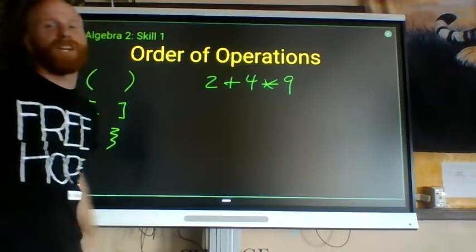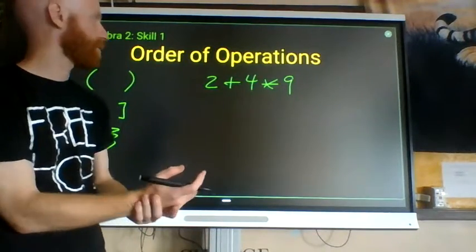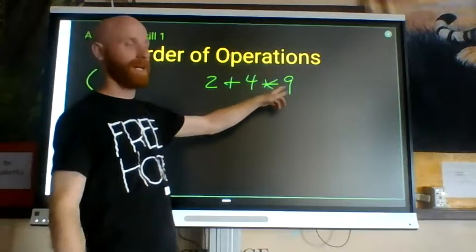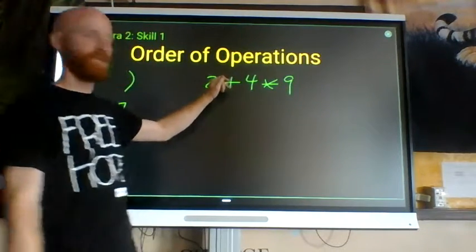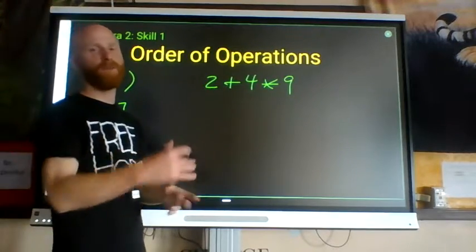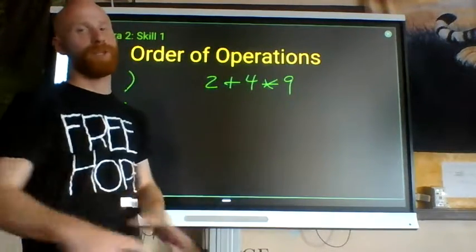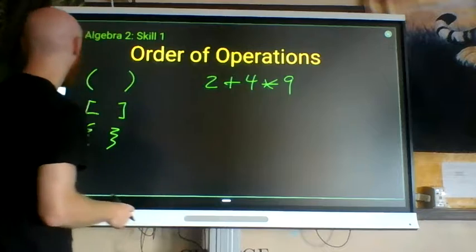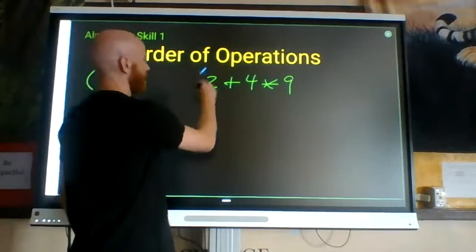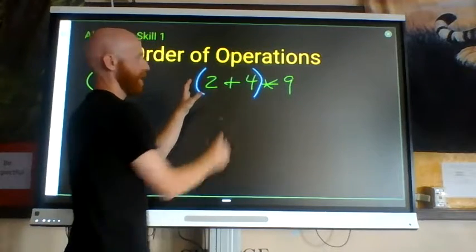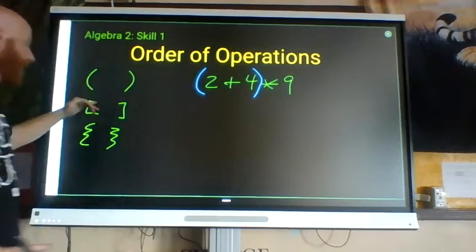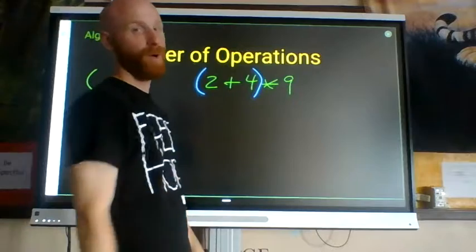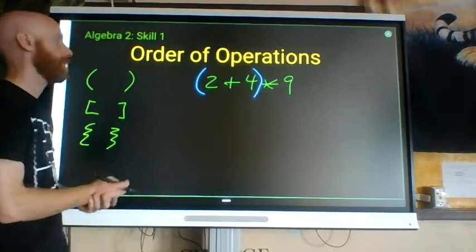Grouping symbols can break order of operations if desired. Normally, multiplication is more powerful than addition, so 4 times 9 is 36, plus 2 is 38. But if a textbook writer wanted addition to happen before multiplication, they would group the 2 plus 4 inside parentheses, brackets, or braces. Then you would add 2 plus 4 to get 6, then multiply by 9 to get 54 — a different answer because operations happen in a different order.